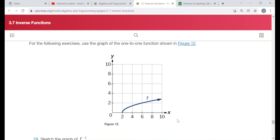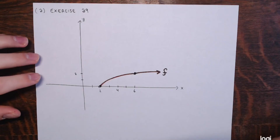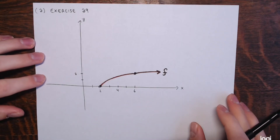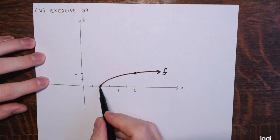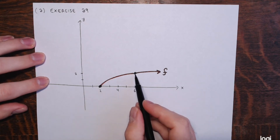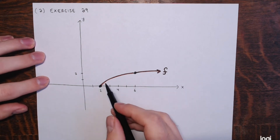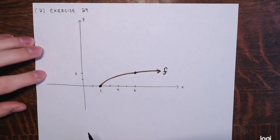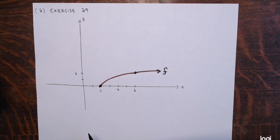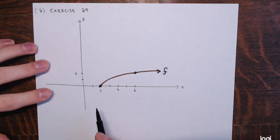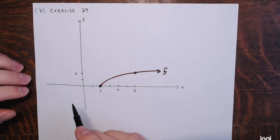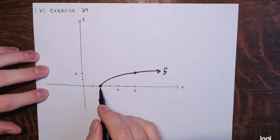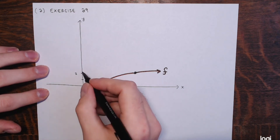I'll draw a rough sketch of what they gave us. It looked like the point (2, 0) was on the graph of f and the point (6, 2), so I plotted those specifically. It was like half a parabola — just the top half of a parabola opening to the right. For the inverse, you're reflecting across the line y equals x, or switching the x and y coordinates, reversing the mapping. So if f has the point (2, 0), f inverse will have the point (0, 2).